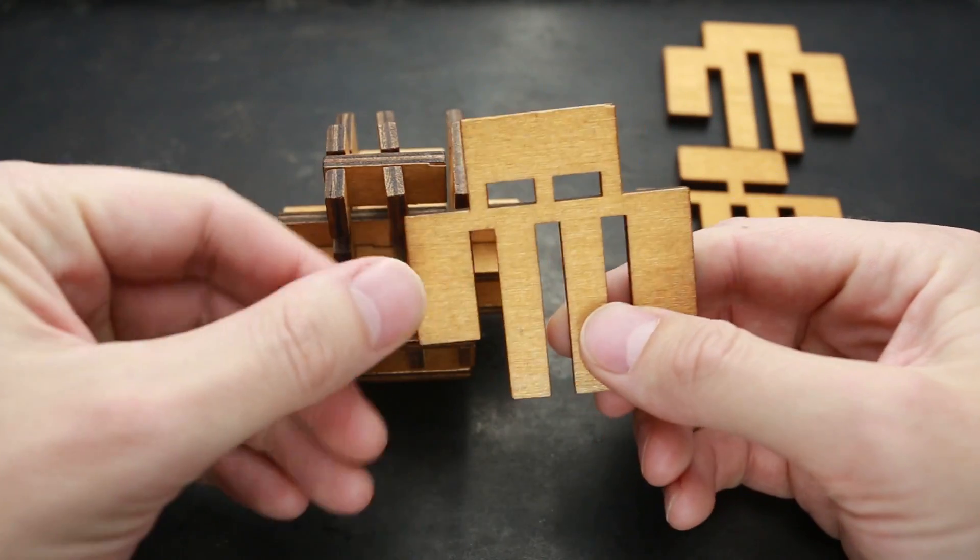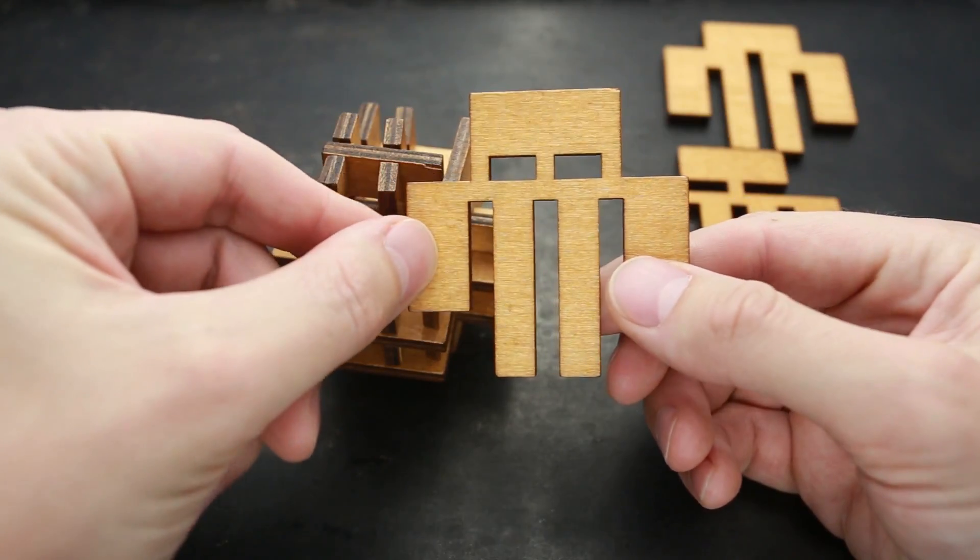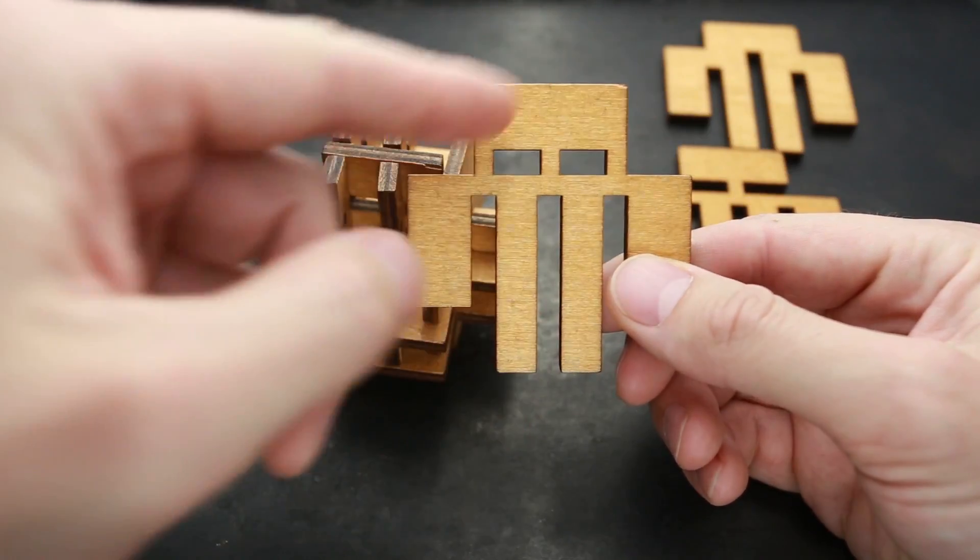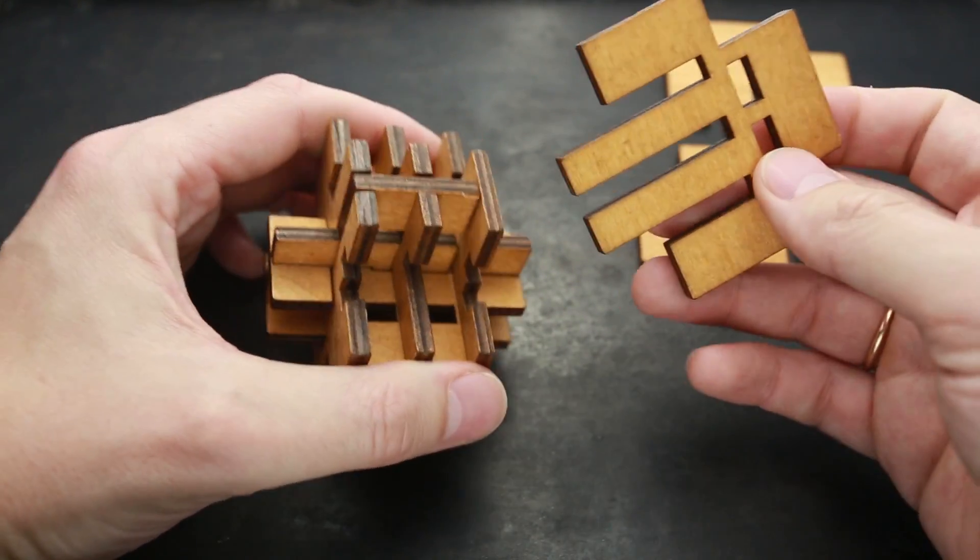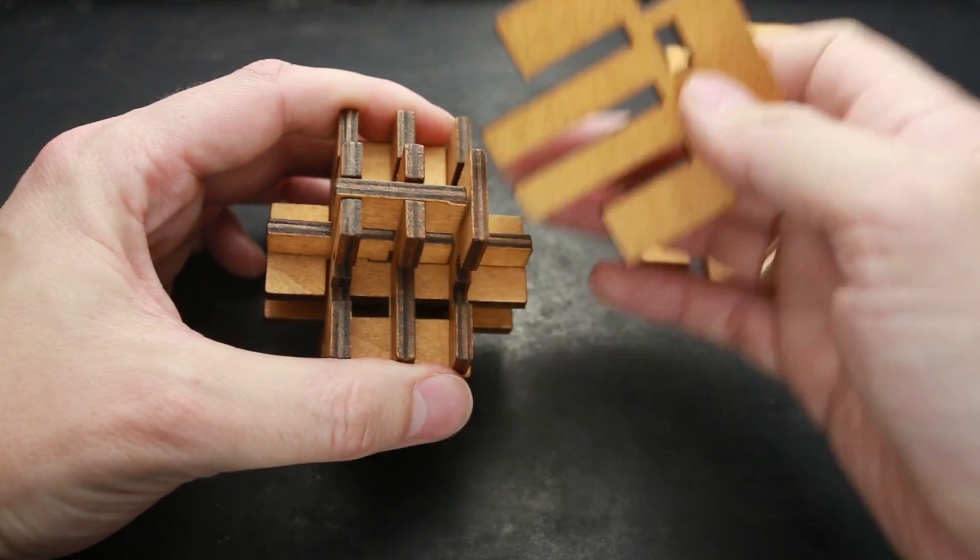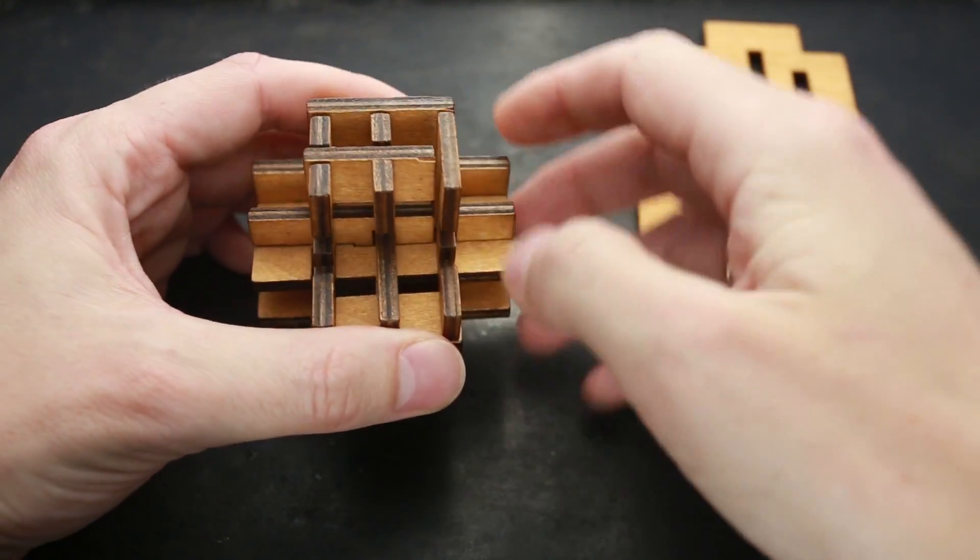And now we have only three parts to assemble. And these three parts are, you can see symmetrical. They have the same on the right and on the left. And it's pretty easy to find a spot for them. The first one goes back there.